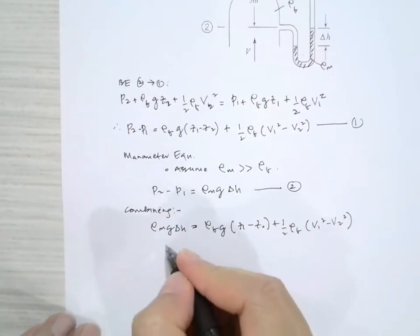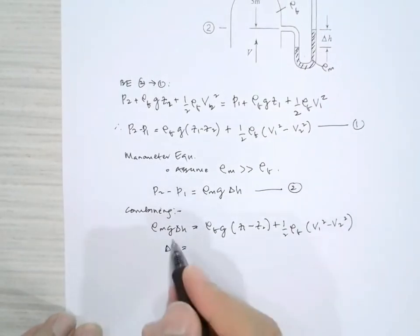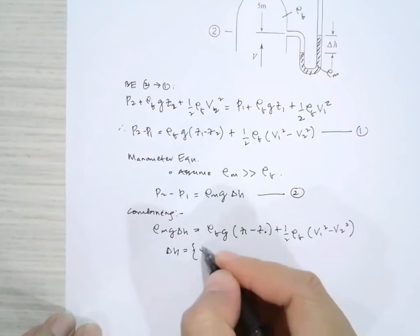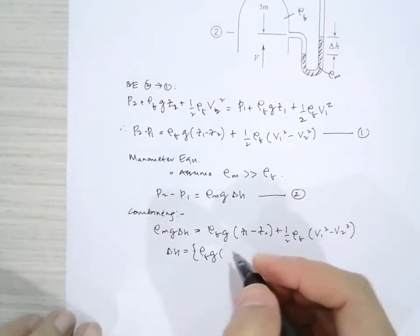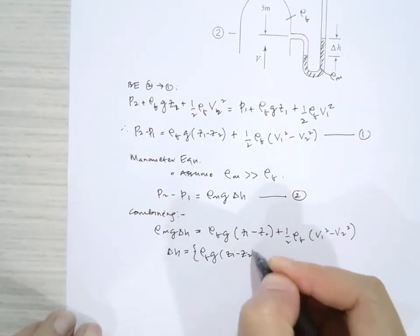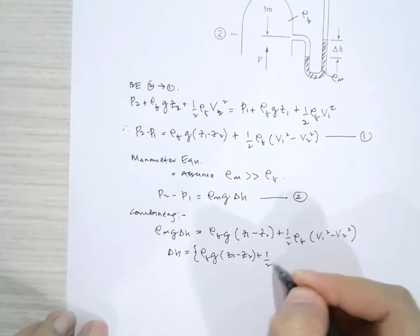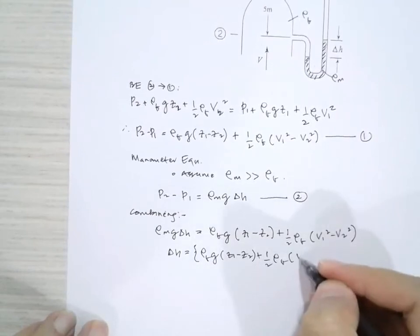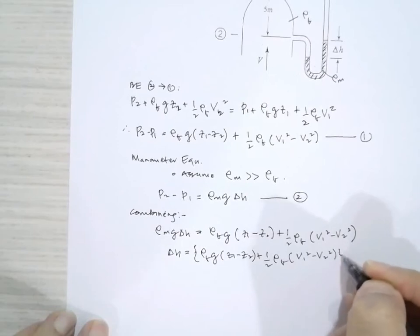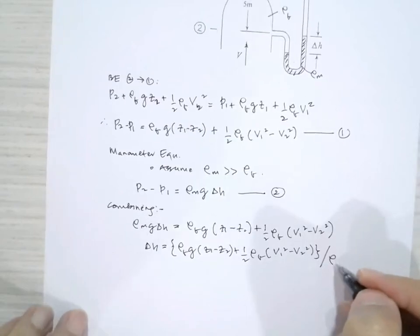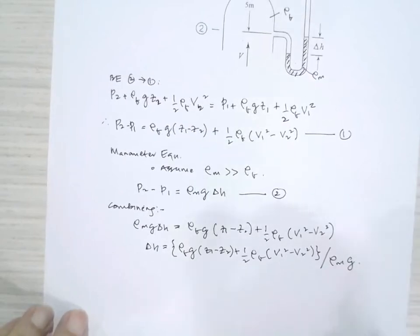We can rearrange that, so we'll get delta H equals rho F G times Z1 minus Z2 plus half rho F times V1 squared minus V2 squared, all divided by rho M G.